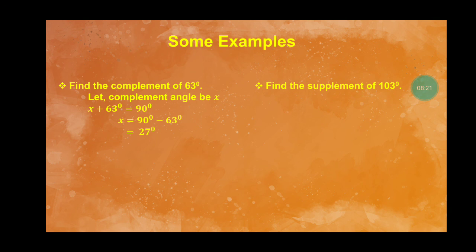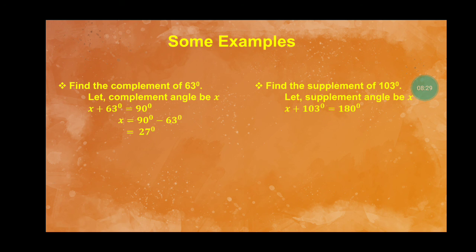Another example: find the supplement of 103 degrees. Let the supplement angle be x. Since supplementary angles sum to 180 degrees: x plus 103 equals 180. Therefore x equals 180 minus 103, which gives x equals 77 degrees.